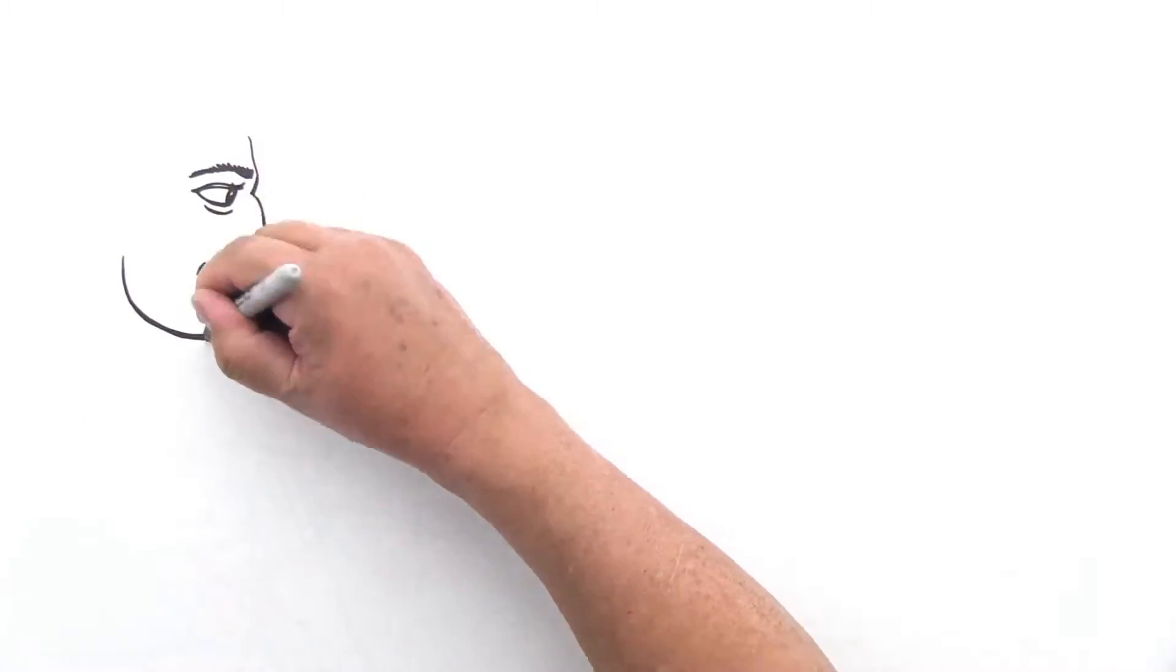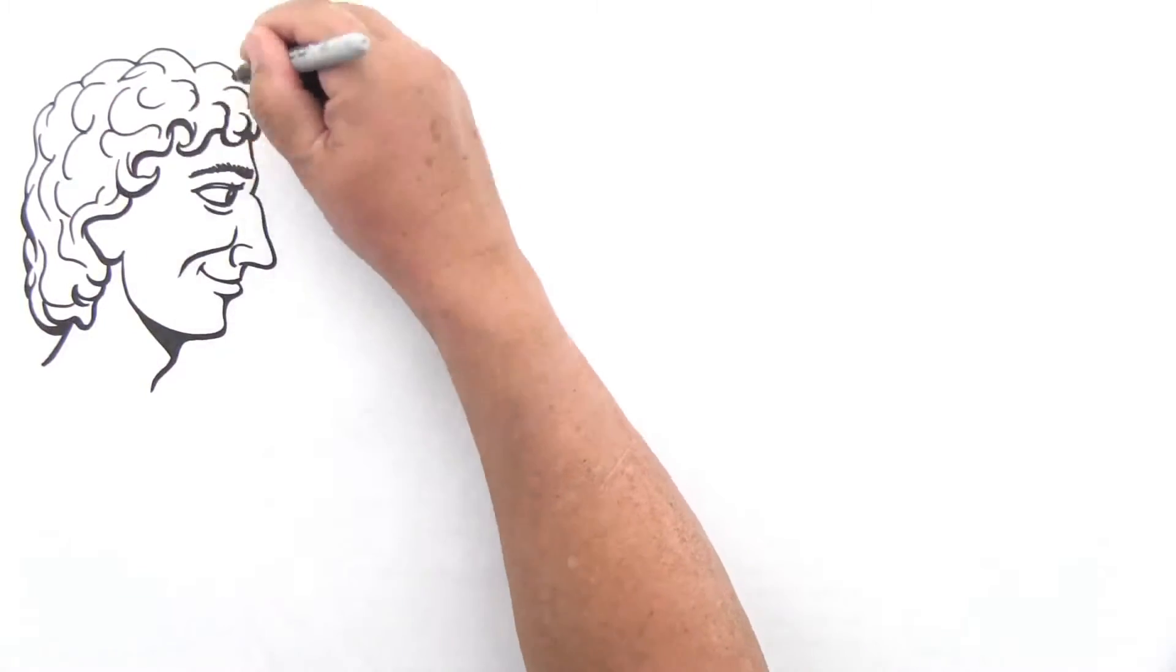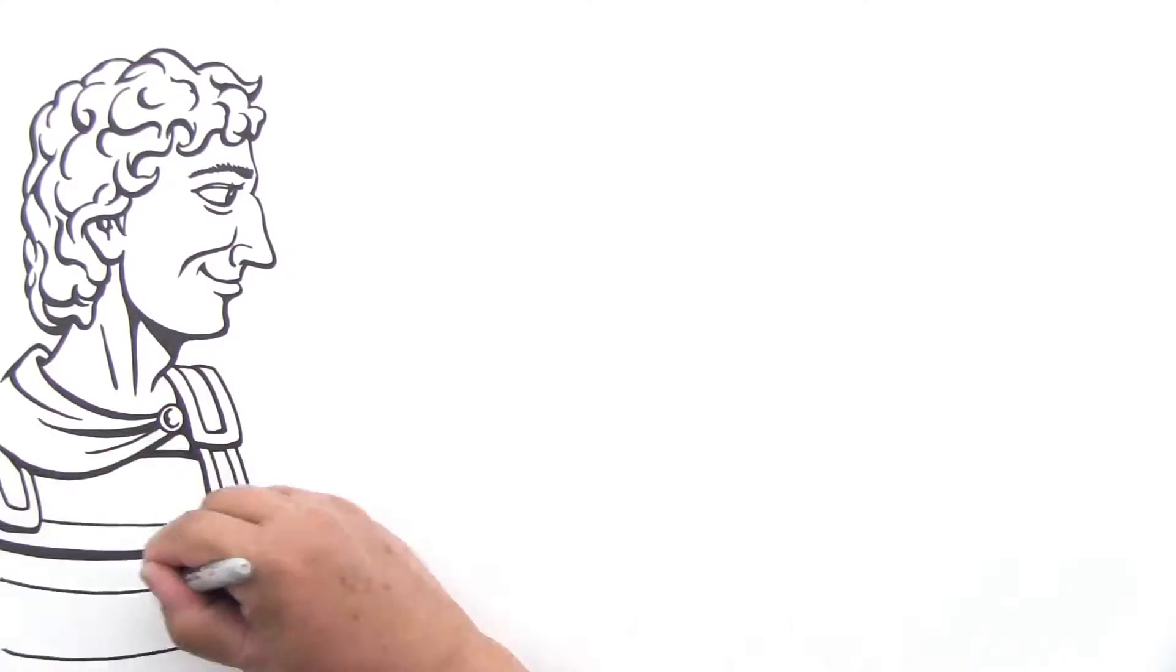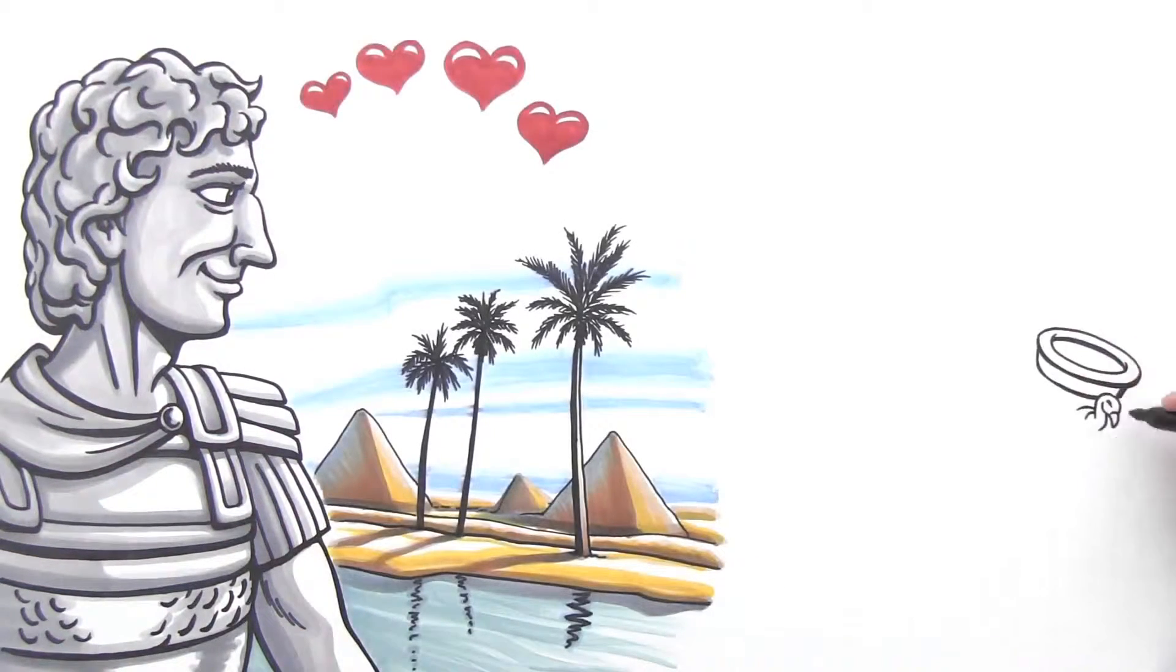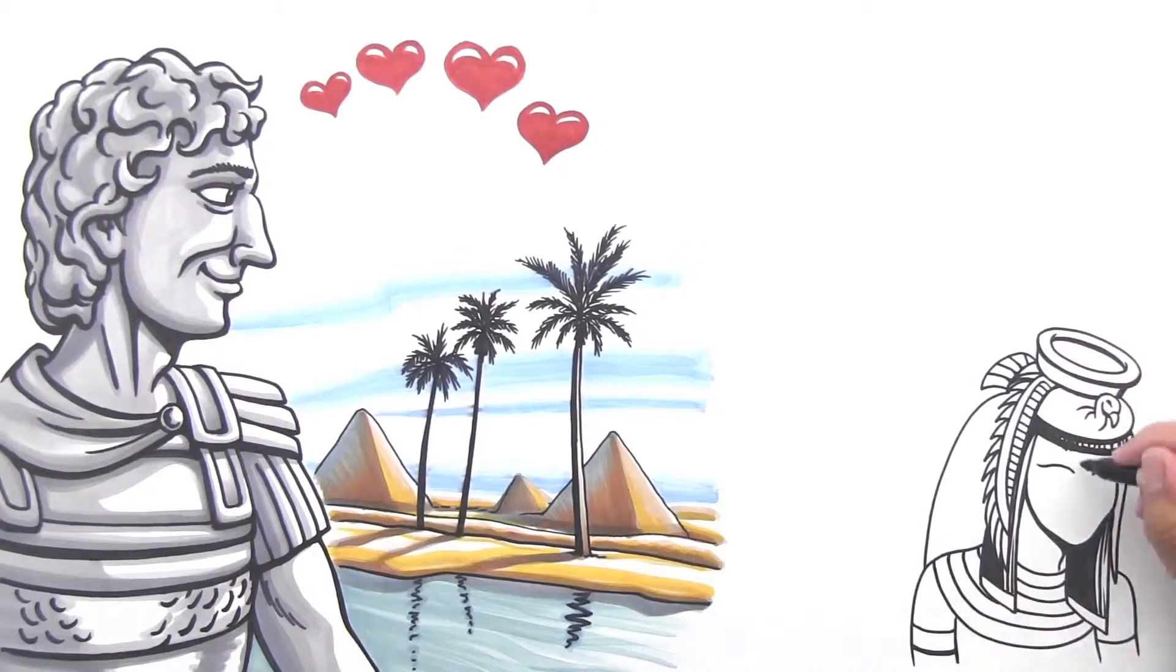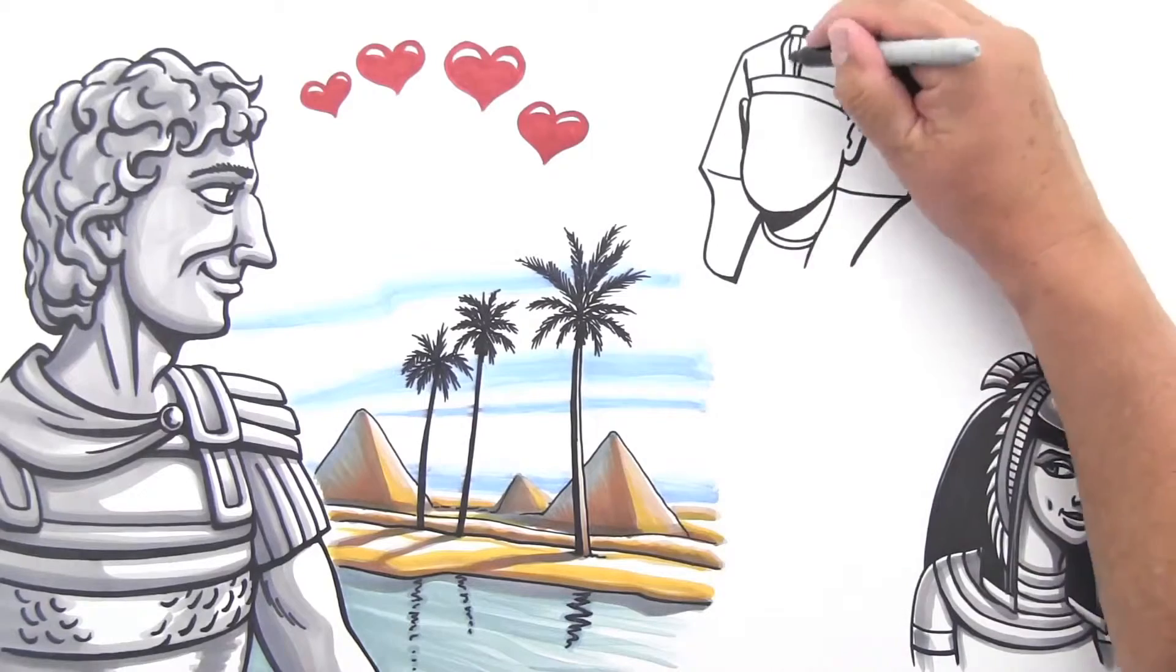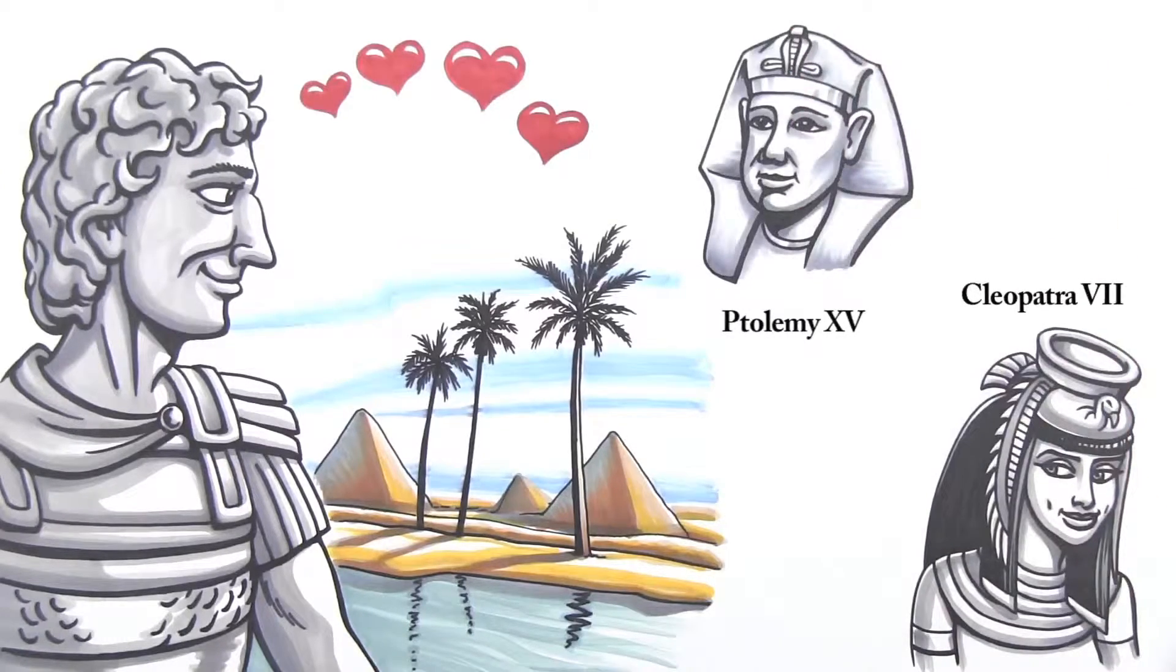Alexander the Great admired the Egyptian kingdom so much that he decided to conquer it in 332 BC. While in Egypt, he founded the city of Alexandria on the northern coast of Egypt and installed his general Ptolemy as pharaoh. Greek elements were introduced into the arts. The Ptolemaic dynasty lasted 275 years and included several Ptolemies and Cleopatras. The most famous of these was Cleopatra VII, whose son, Ptolemy XV, was the last pharaoh of Egypt. In 30 BC, Rome conquered Egypt.